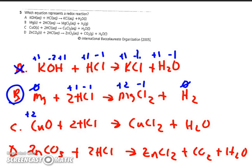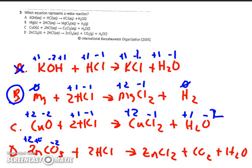Reactions C and D both look like they should be redox because there's some replacement going on. However, in C, copper is plus two on both sides — since the oxidation number didn't change, it's a replacement reaction but not a redox. In D, carbonate has a minus two charge as a polyatomic ion; breaking it down, carbon is plus four on both sides. Again there was no change in oxidation number, so only B is considered a redox equation.